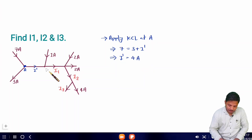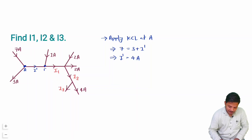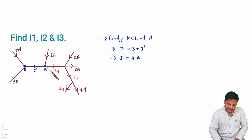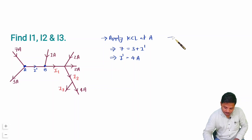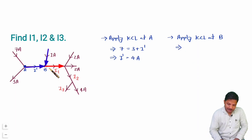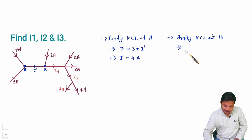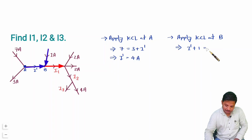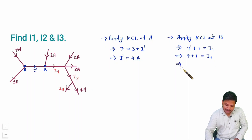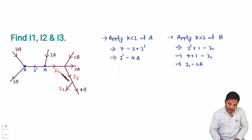Now we have node B and the value of I-dash. Applying KCL at node B: entering currents are I-dash and 1 ampere, and leaving current is I1. So I-dash + 1 = I1, and since I-dash = 4 amperes, we get 4 + 1 = I1. Therefore I1 = 5 amperes.